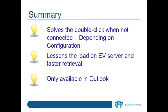In summary, Vault Cache gives you, the end user, the capability to access archived emails when you're not connected to the corporate network. It's also helpful when users are connected to the corporate network, since the retrieval of archived items can be faster because it's coming from your local cache rather than the Enterprise Vault server itself. One thing worth remembering is that Vault Cache is only available to Outlook users with the Enterprise Vault Outlook add-in installed.